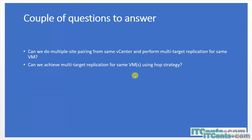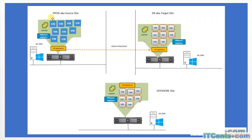The short answer is no, and I'll prove it during this series. Here is the lab topology: I have a source site (production), a DR site (target), and a third offshore site at an undisclosed location. The production site has a vCenter, ESXi servers, AD/DNS, and a Virtual Replication Appliance. The target and offshore sites similarly have their own vCenter, VRA, and ESXi hosts. Name resolution and time sync are very important for vSphere Replication to work.